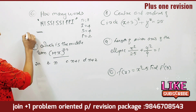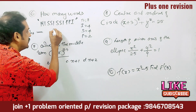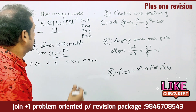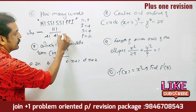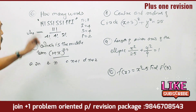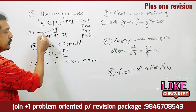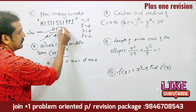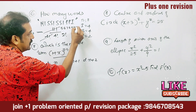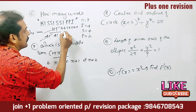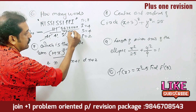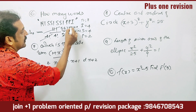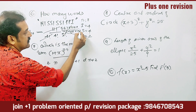Therefore, the answer is equal to N factorial divided by the repeated factorials: 11! divided by 4! × 4! × 2!. We cancel 4! with part of 11! to get 5 × 6 × 7 × 8 × 9 × 10 × 11. Then divide by 4! (= 1×2×3×4) and 2! (= 1×2). So 2×4 = 8 and 3×2 = 6, which cancel out.